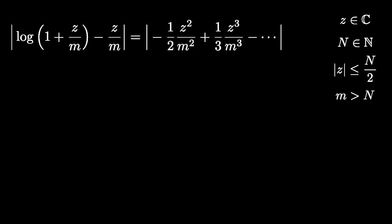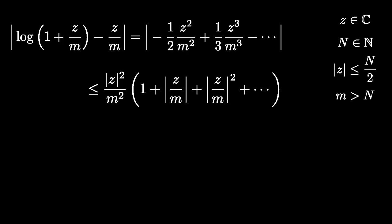We can factor out the absolute value of Z squared over N squared and apply the triangle inequality. And using the fact that the absolute value of Z is less than N over 2, we find a bound for the absolute value of this expression.